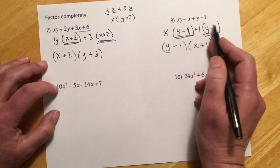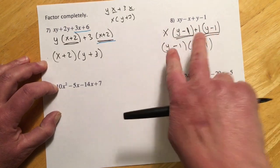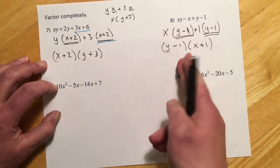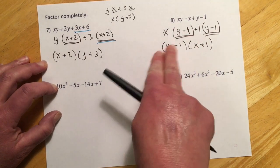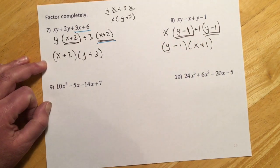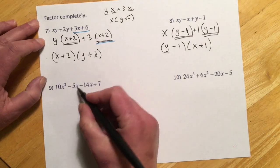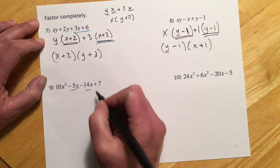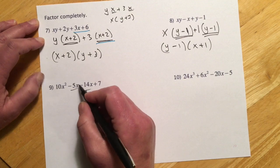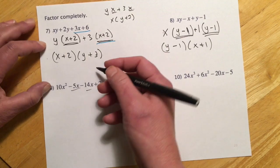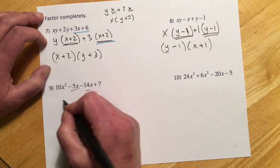You can write the factors in either order — both are completely correct. For number nine, this one might tempt you to combine like terms, but the answer is no — don't combine them. Combining them turns it into a problem you don't know how to do yet; that's in the next sections. They're doing a little preview here, so treat it as a four-term problem.